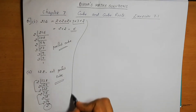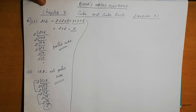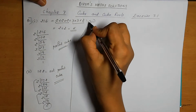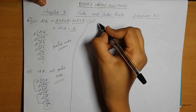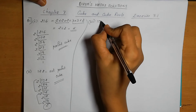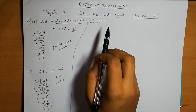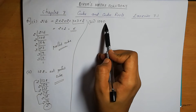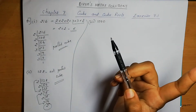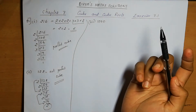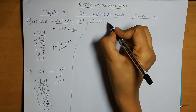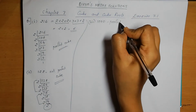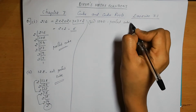The third number is 1000. It is clear from the three zeros that we can form one triplet of 10s: 10 × 10 × 10 = 1000. So 1000 is a perfect cube, and its cube root is 10.